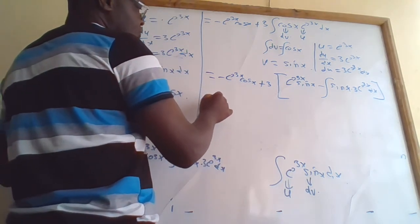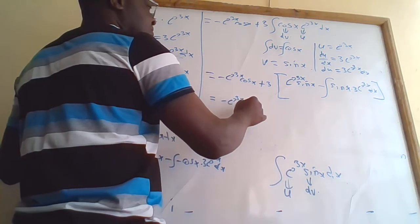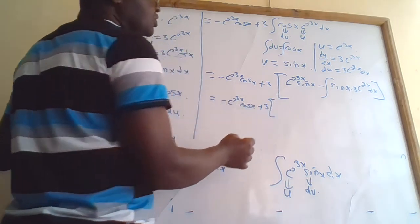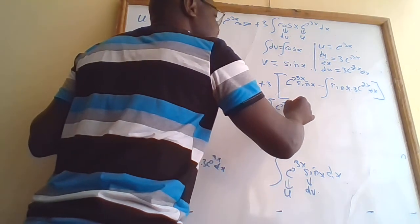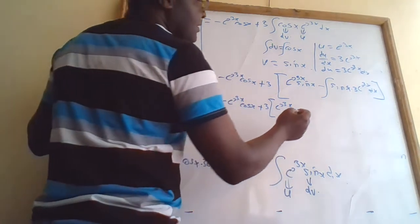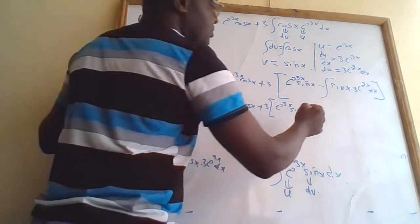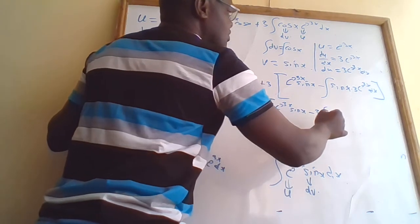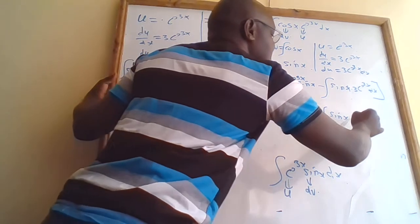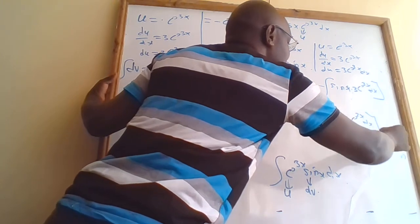This equals −e^(3x)·cos(x) plus 3·e^(3x)·sin(x). Taking the constant 3 out, it becomes minus 3 times the integral of sin(x) · e^(3x) dx.